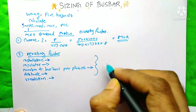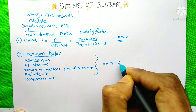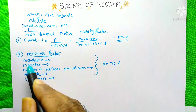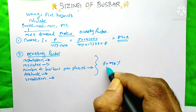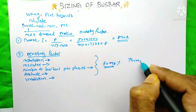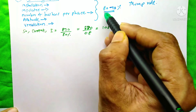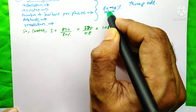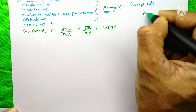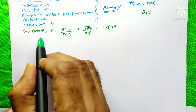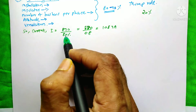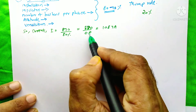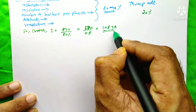In industry, we generally take 80 to 90 percent as the derating factor. Without going through the detailed table, this is a thumb rule. Suppose our derating factor is 80% — this means the bus bar provides only 80% of its rated capacity, so 20% is lost. To compensate, we divide the current by 0.8: 870 / 0.8 = 1087 amps.